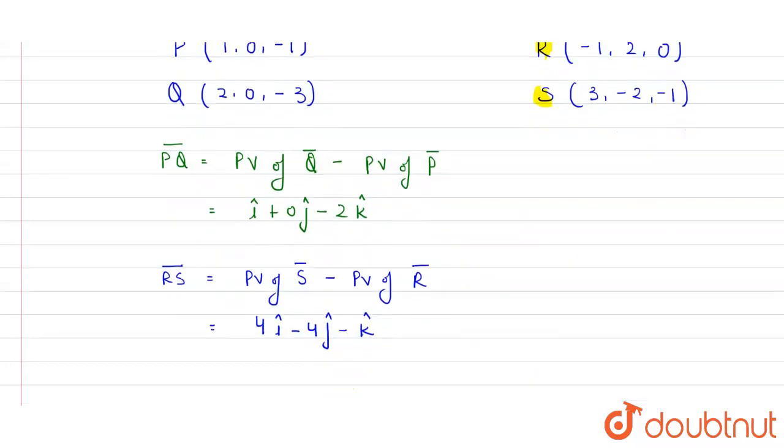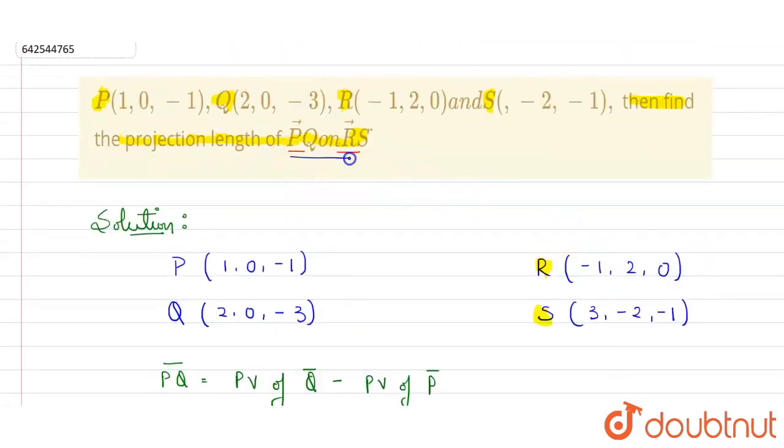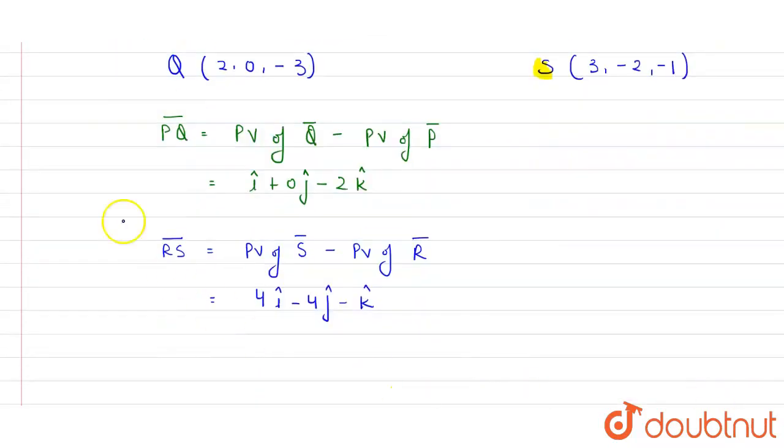I have my PQ and RS. Now, we have to find the projection of PQ on RS. We know that, projection of PQ on RS there is a direct formula. Projection of vector A on vector B. Projection of PQ vector on RS vector. It is equals to, we are having direct formula for projection,